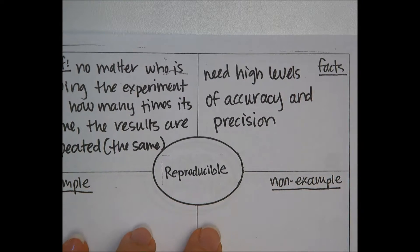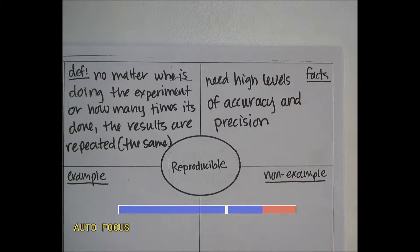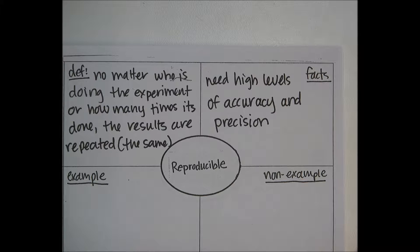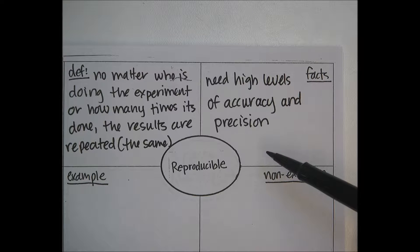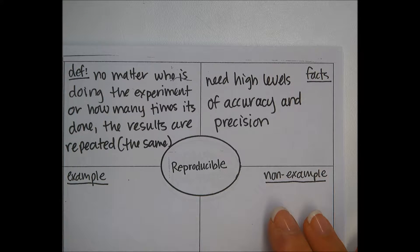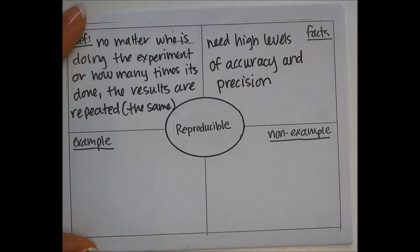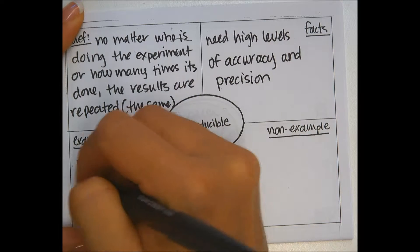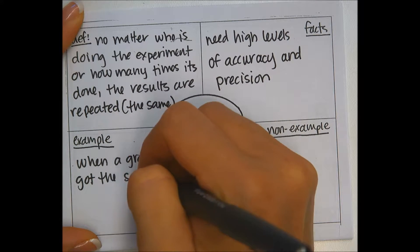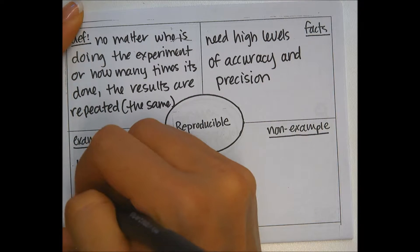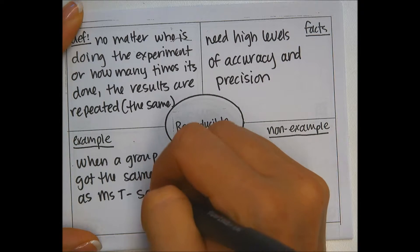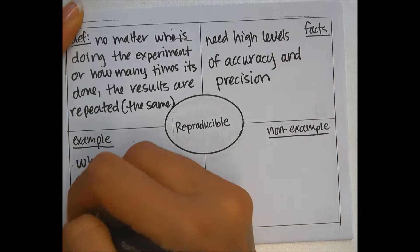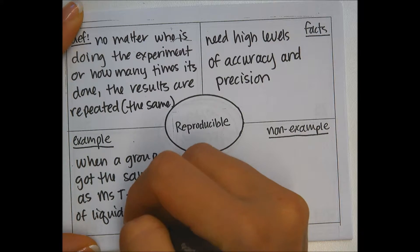We saw this in our liquid volume lab, where each group had done the same experiment but everyone ended up with kind of different results. Because we didn't have those high levels of accuracy and precision, we saw that the results weren't reproducible for every single person. An example would have been when a group got the same results as me — the same colors of liquid and the same amounts.